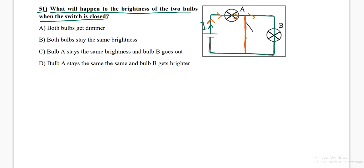So nothing will happen to the brightness of bulb A and bulb B. By reading the options here, in A they say both bulbs get dimmer—no. In B they say both bulbs stay the same brightness.